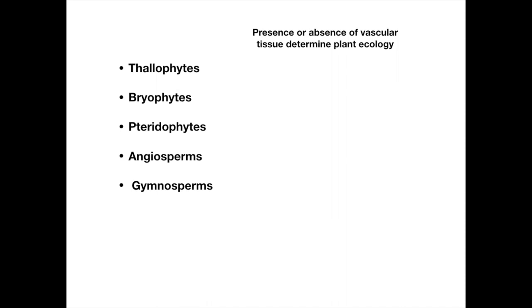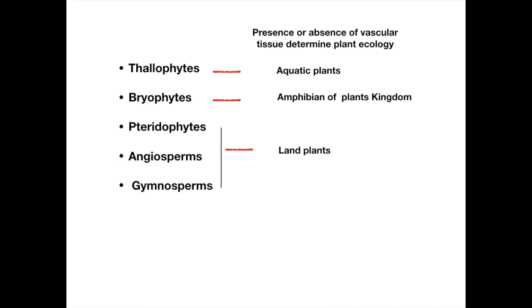The presence or absence of vascular tissue determines the environment where a plant can live. Thallophytes have an undifferentiated body and lack vascular tissue, so they are mainly aquatic. Bryophytes have root-like, stem-like, and leaf-like structures but lack vascular tissue, so they cannot transport water and food over great distances — they must live in moist and swampy areas, which is why they are called the amphibians of the plant kingdom. Pteridophytes, angiosperms, and gymnosperms have a true root system and vascular tissue, enabling them to thrive on land. Thanks for watching, Allah Hafiz.